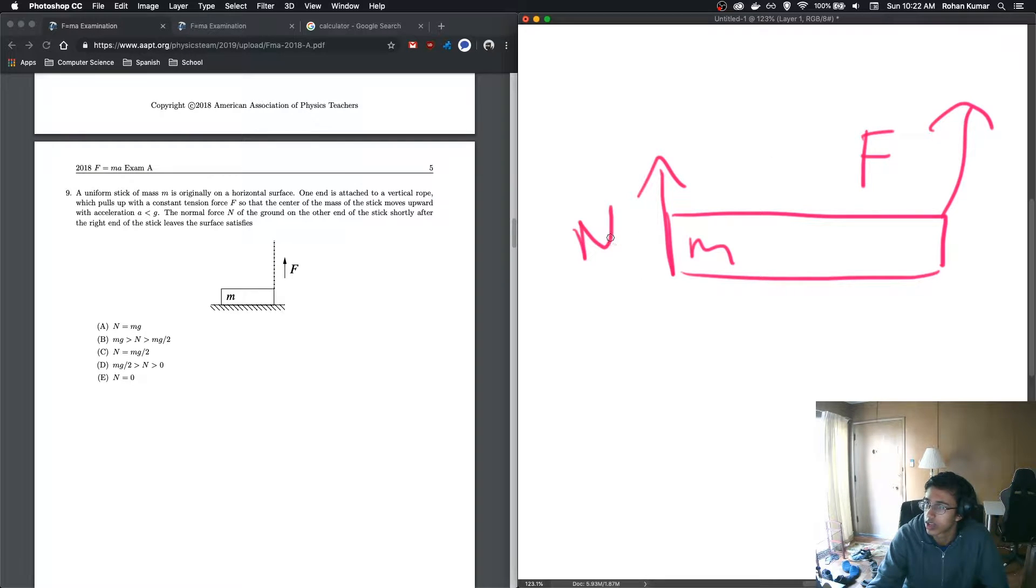Basically, when I see these two forces, the first thing I'm thinking is torque because we have a stick and we want the torque on it to be zero. No, but we don't want the torque to be zero because it is lifting off the ground, so that's not true. We also have Mg, don't forget that.